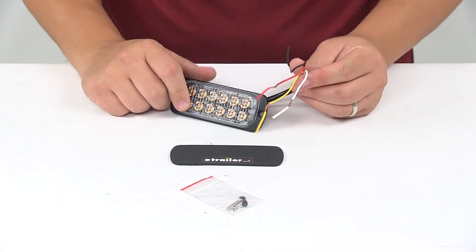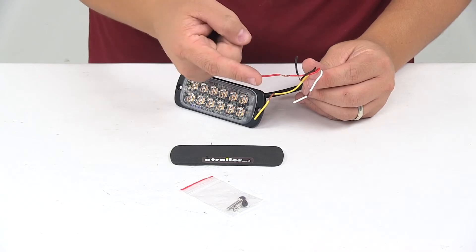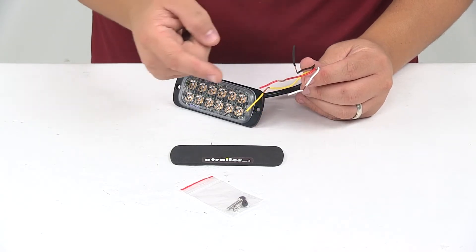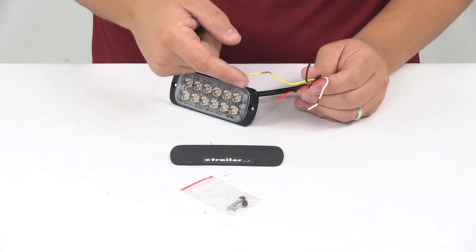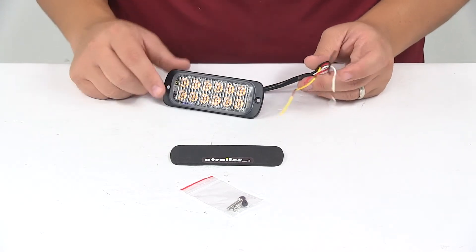It's a four wire design. The red wire is your positive power wire, black is ground, white is for low power, and then yellow is for connecting multiple light heads together and also for changing the flash pattern.